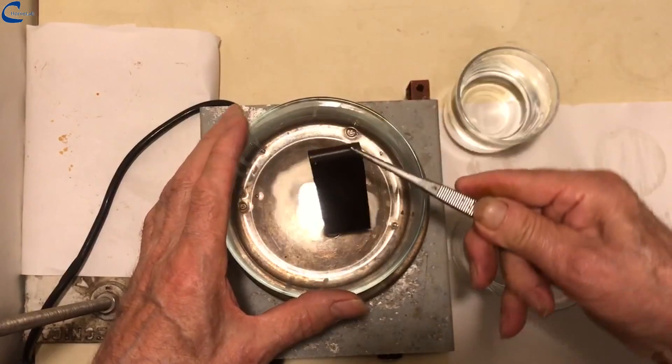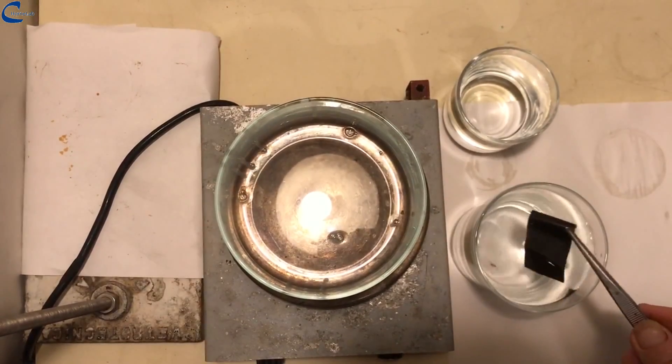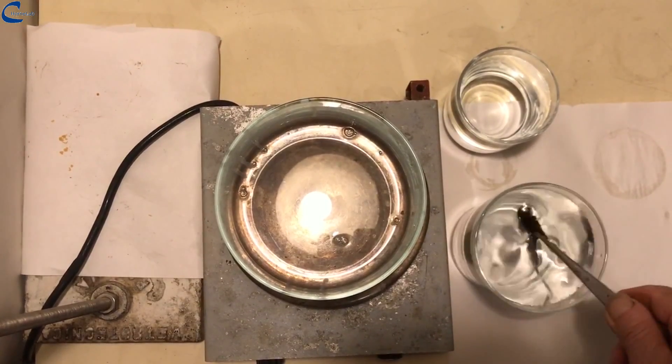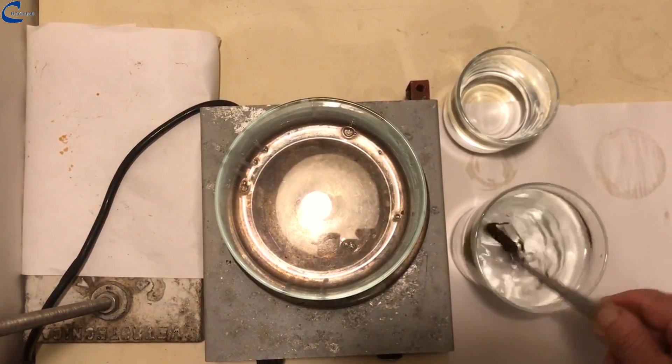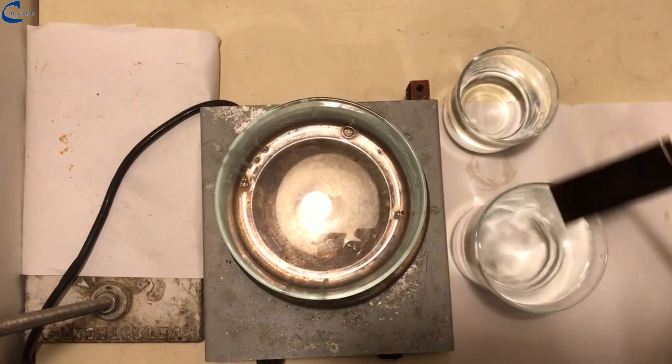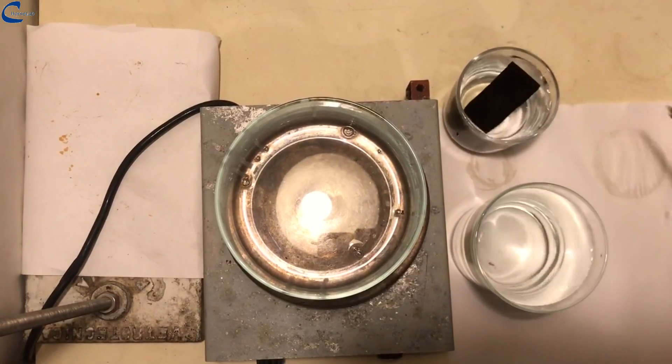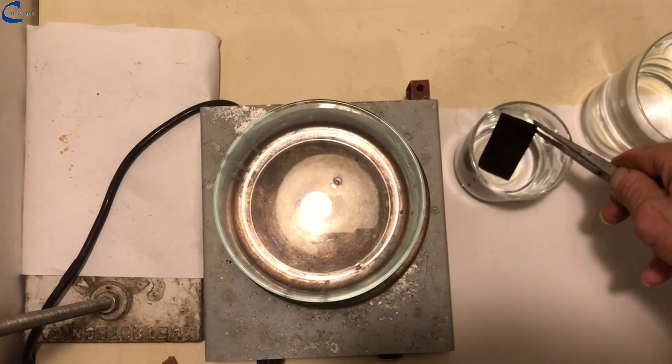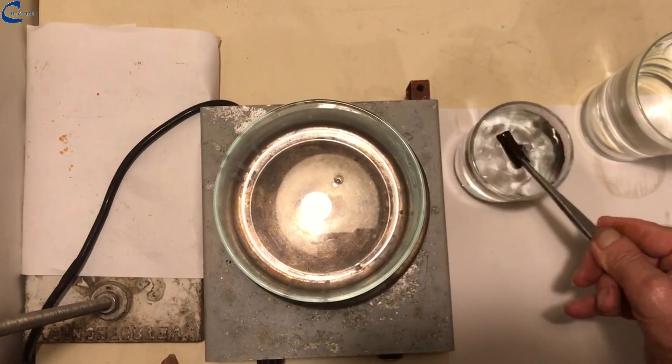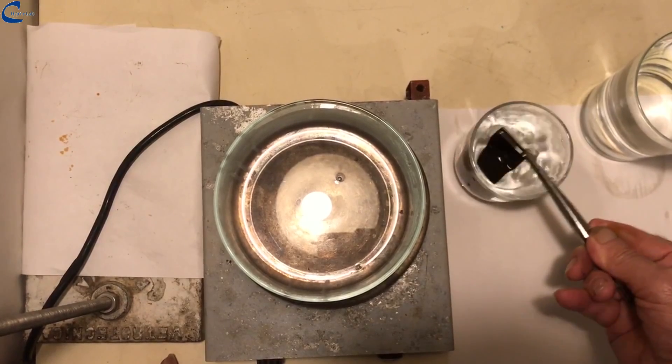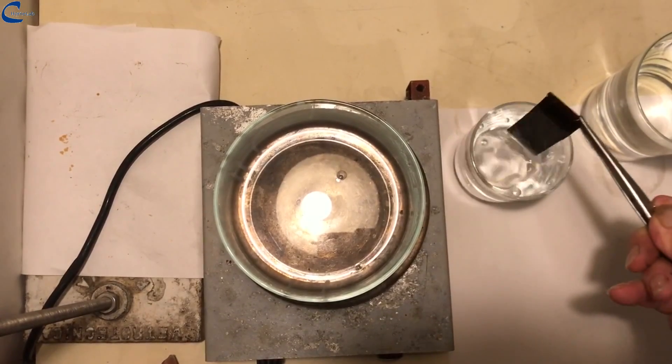The electrode is extracted from the oxidation bath and washed first with tap water, then with distilled water, and put to dry.